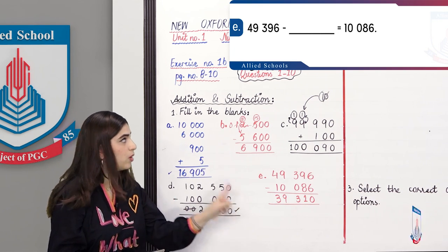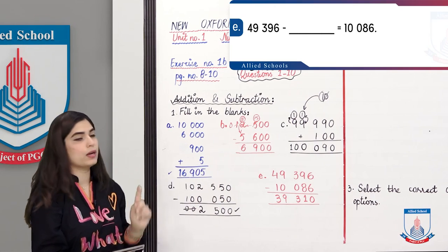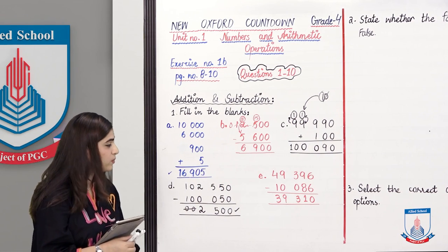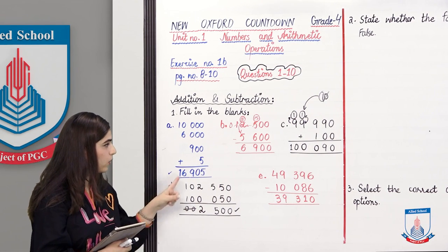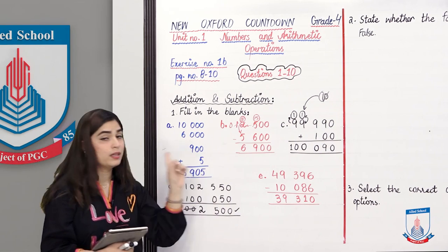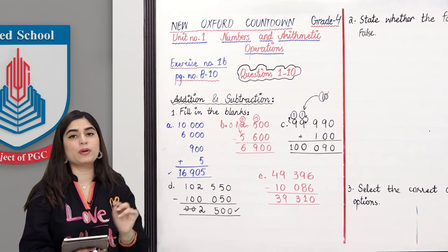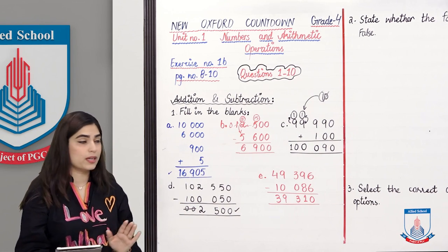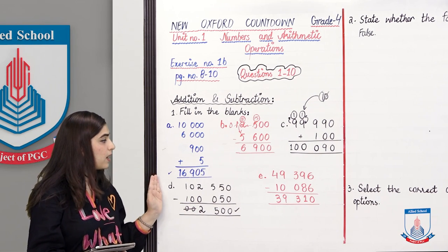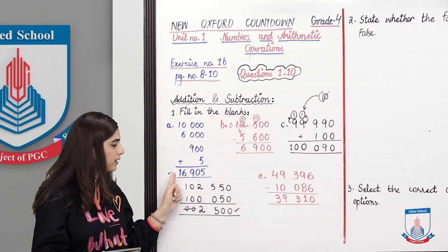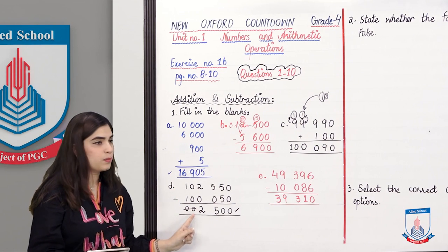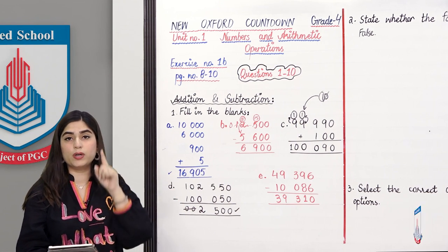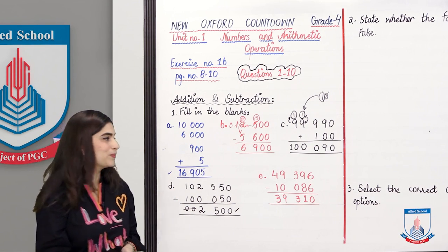Up to here, Part 1 is complete. Write the five answers — 1, 2, 3, 4, 5 — in the blanks. Today you have learned how to add, how to subtract, and how to read and understand the question statement.